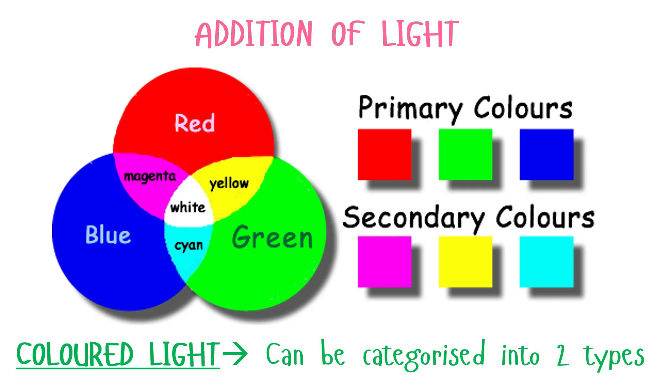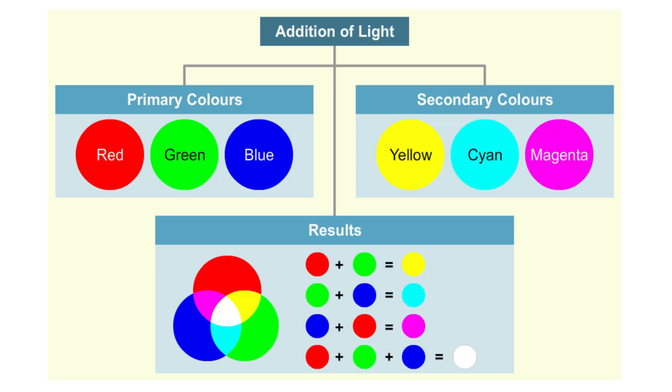Light can be categorised into two types, the primary colours and the secondary colours. Cahaya berwarna boleh dikategorikan kepada dua jenis iaitu warna primer dan warna sekunder.